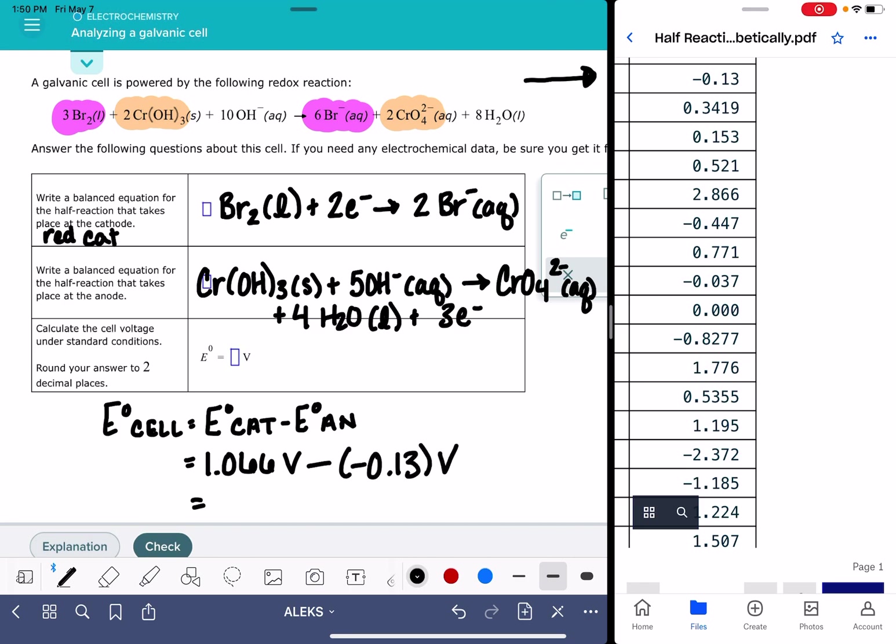And so now we can calculate the overall voltage. It says to two decimal places. And one thing I've noticed with these Alex problems is it really does kind of change its criteria about what it wants you to enter in terms of sig figs or decimal places or things like that. So just make sure you're always double checking that. 1.20 volts.